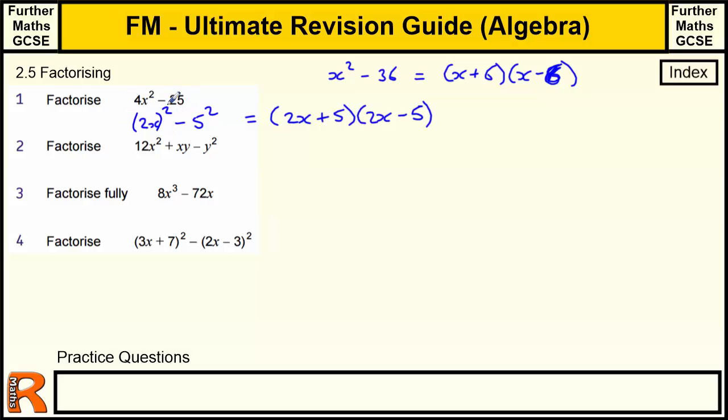We also might be given a slight variation on this, something like 8x² minus 50, which is double this one. If we start by taking out a factor of 2, we get 4x² minus 25, and now we can factorize this bracket. Our answer will be the same as this one but with a 2 on the front.